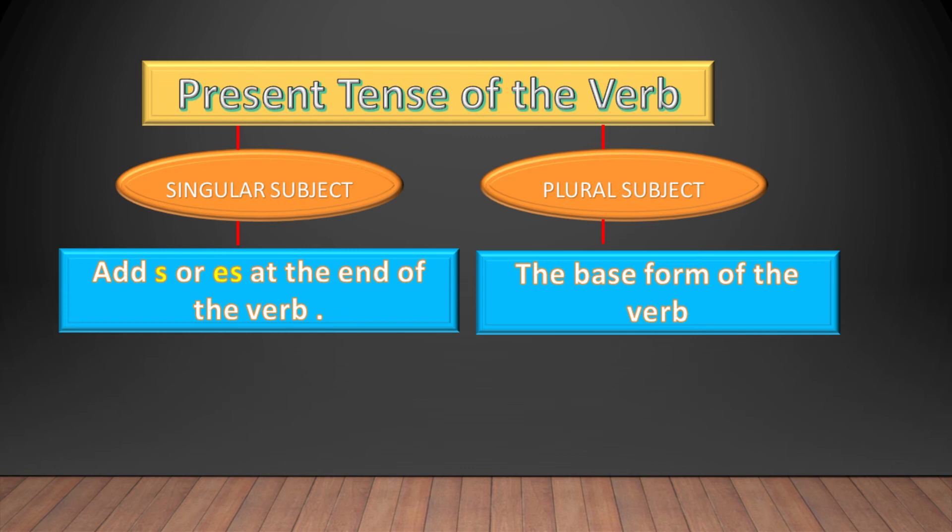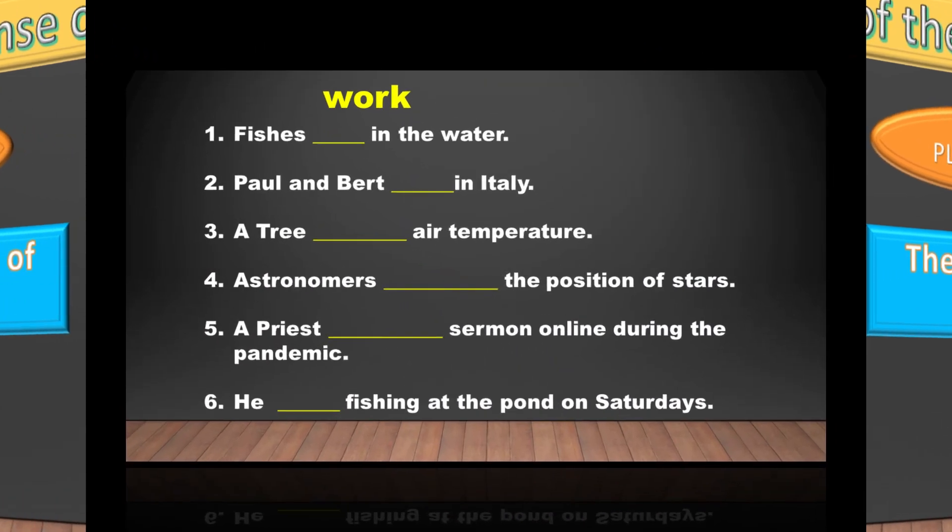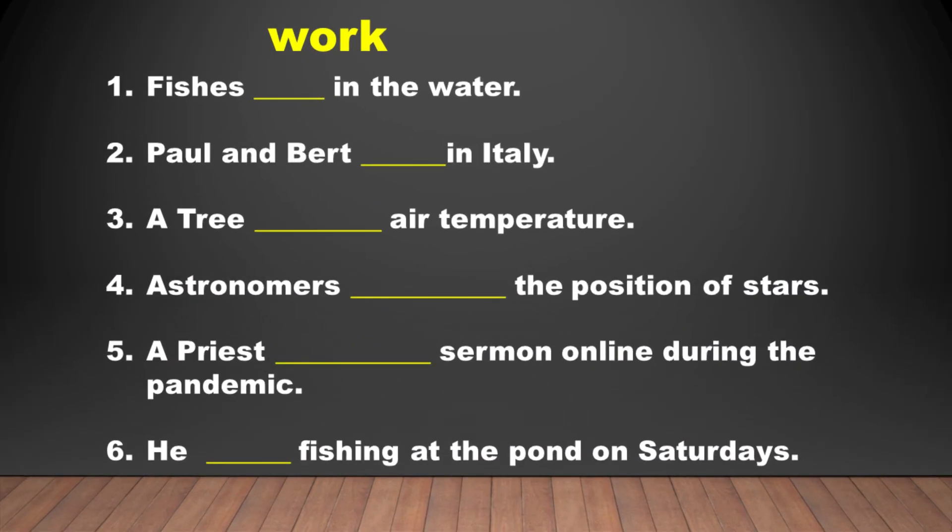This time you are going to apply the concept you have learned from this lesson. I'm going to flash verbs on top of the sentences, then you place them on the blank with the appropriate sentence. Let's begin. This verb: work. Note that it is in the base form of the verb. Which of the sentences below is appropriate? Yes, the appropriate sentence is Paul and Bert work in Italy. It is so because this sentence has a plural subject.